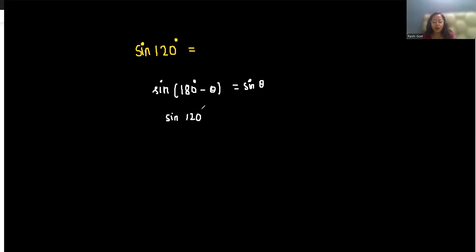Sine 120 degrees we can write as sine 180 degrees minus 60 degrees. So it becomes sine 60 degrees. And what is sine 60 degrees?